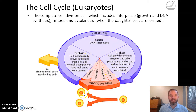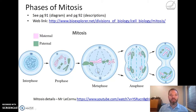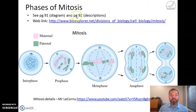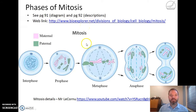At the end of mitosis the cell can divide into two, and that's called cytokinesis. If you want to look at the details of these phases of mitosis there's a diagram in your textbook that's really useful, with descriptions on page 92. This web page also covers some of that information in detail, and Mr. Le Corneau has a video on mitosis here.